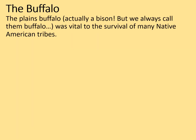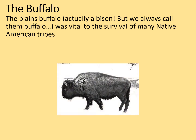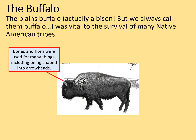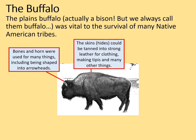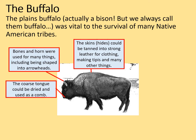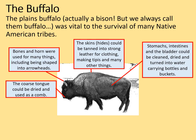The buffalo — the plains buffalo, which is actually a bison but we always call it a buffalo — was vital to the survival of many Native American tribes on the plains. The bones and horn could be used for many things, including being shaped into arrowheads. The skins, or hides, could be tanned into strong leather for clothing, making teepees, and for many other things as well. The coarse tongue could be dried and used as a comb. Stomachs, intestines and the bladder could be cleaned, dried and turned into water-carrying bottles and buckets, which was vital given that they might not encounter a water source for many days.